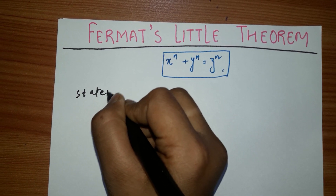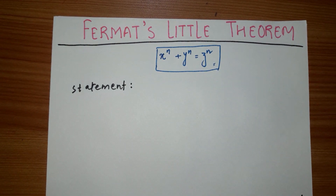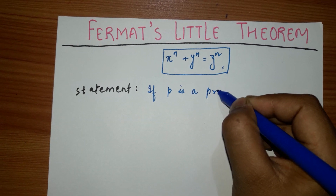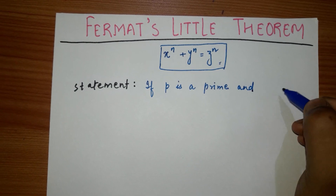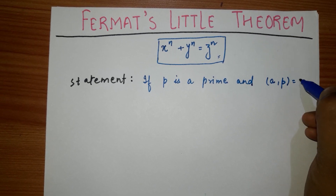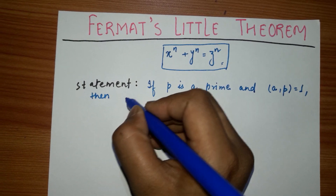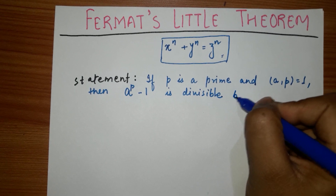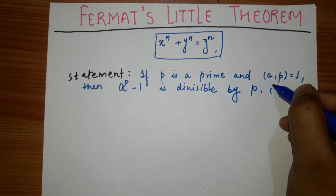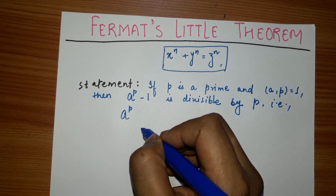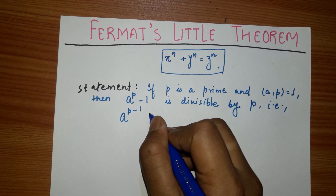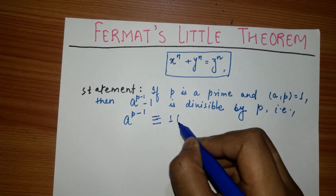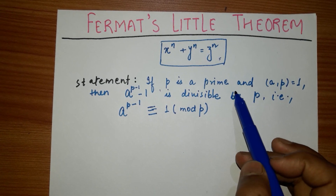Let us see what Fermat's Little Theorem states. It states that if we take any number p which is a prime number, and the GCD — that is, the greatest common divisor — of a and p is equal to 1, then a to the power p minus 1 is congruent to 1 mod p.